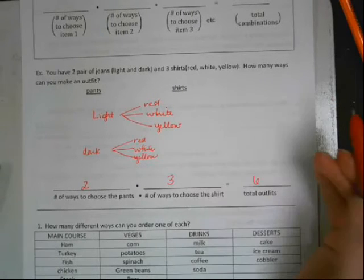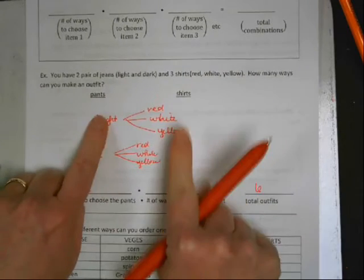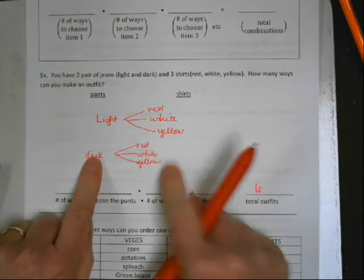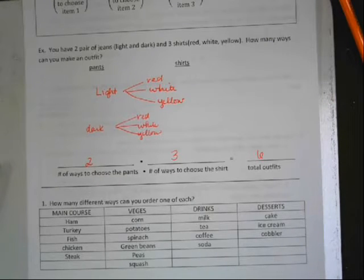From our tree diagram, if we wanted to create a sample space, we could. It would be light red, light white, light yellow, dark red, dark white, light yellow. If you wanted to create a sample space. Because we didn't do, I don't think we did one, a tree diagram into a sample space.